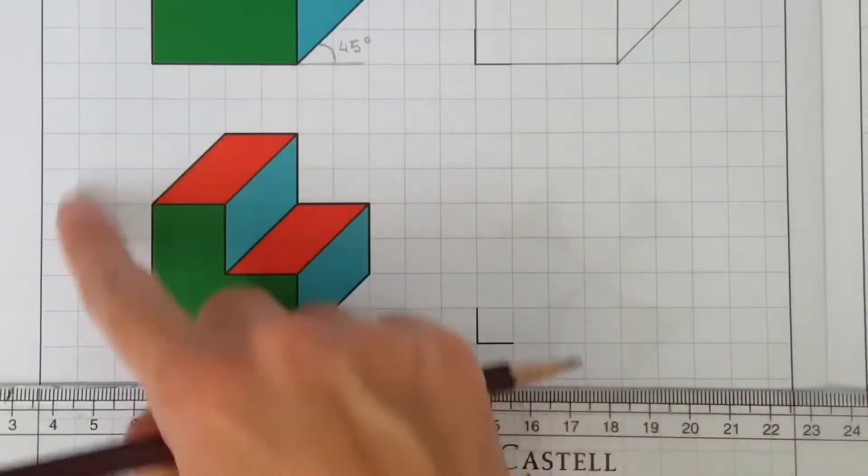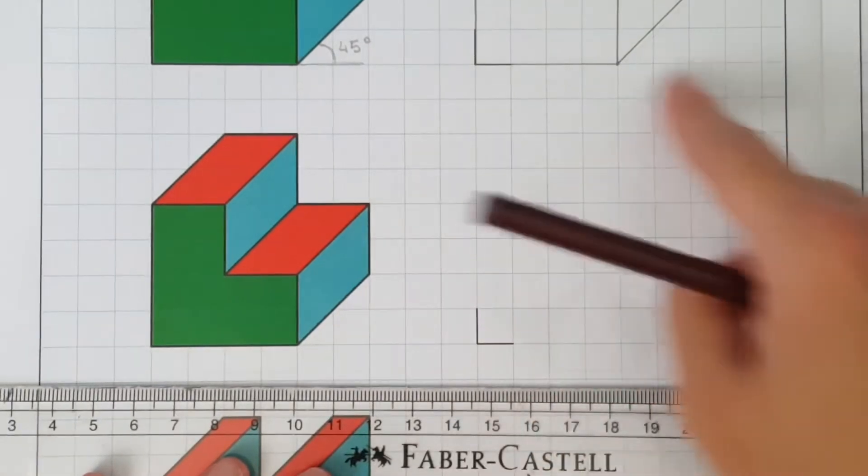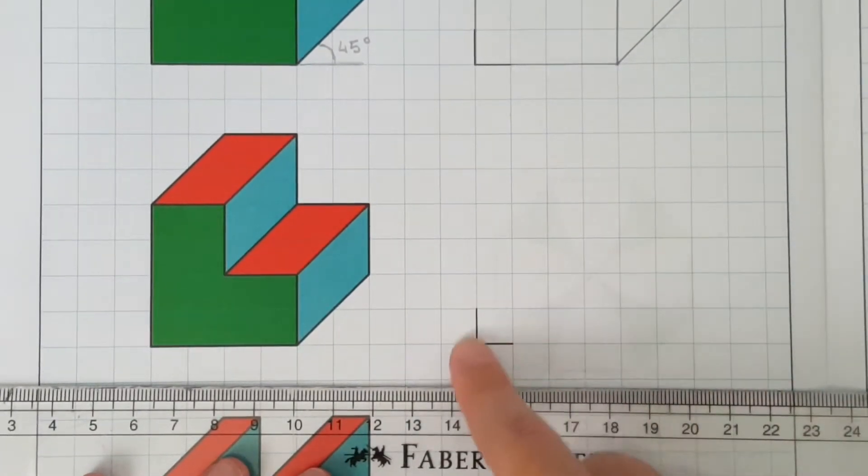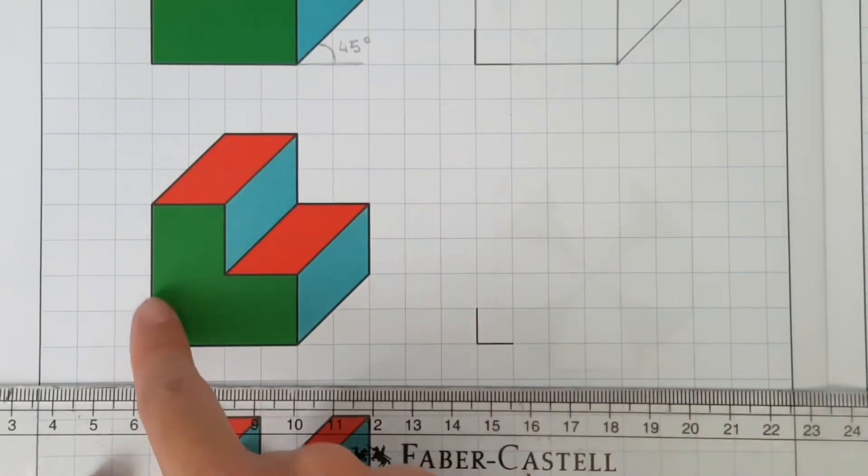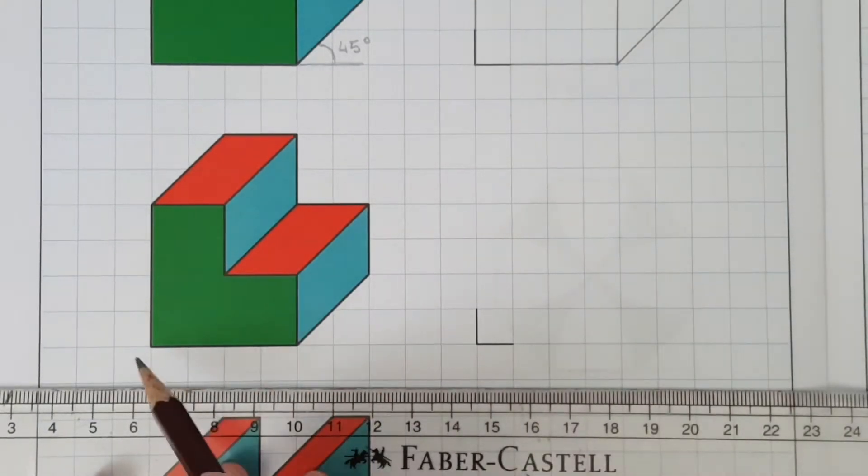The next oblique projection that we must replicate is this L shape right here. As with all the examples in this exercise, we have the lowest left corner already done for us in the empty workspace.